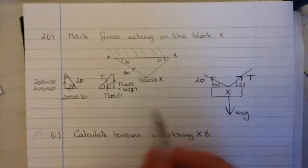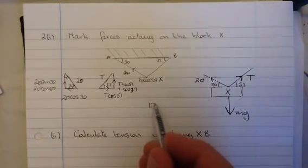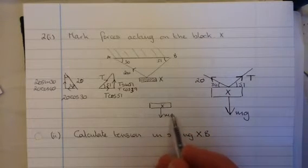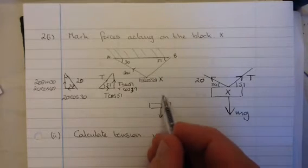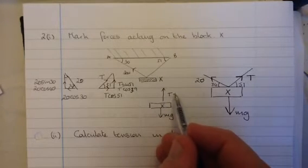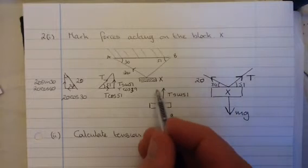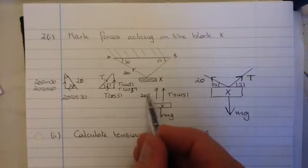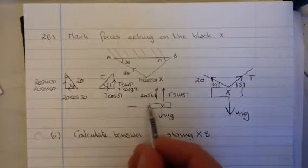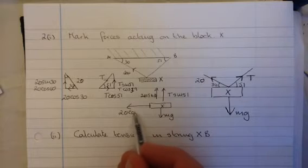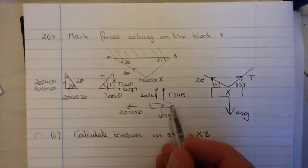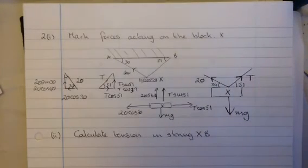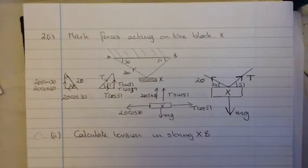So if you want to draw a resolved forces diagram, you could do so like this as follows. You've got X, vertically down, Mg, vertically up with two forces. We've got T sin 51, and 20 sin 30. To the left, 20 cos 30. And to the right, we have T cos 51.